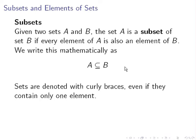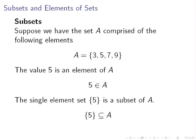Now, just a quick remark: sets are denoted with curly braces even if they contain only one element. Suppose we have a set A comprised of the following elements: A equals {3, 5, 7, 9}.